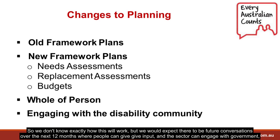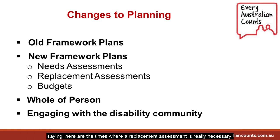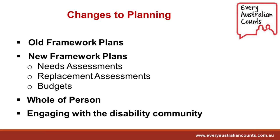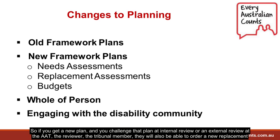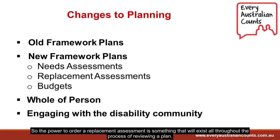We would expect future conversations over the next 12 months where people can give input and the sector can engage with government on when a replacement assessment is really necessary. Replacement needs assessments will also be something that can be considered through a review — if you get a new plan and challenge it at internal review or at the AAT, the reviewer or tribunal member will also be able to order a new replacement assessment. So the power to order a replacement assessment exists all throughout the process of reviewing a plan.